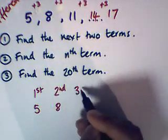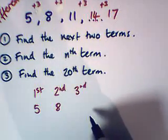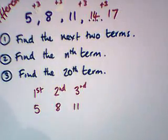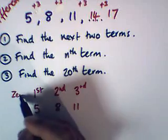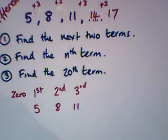Term number 3, the third term, is 11, and so on. Now, what I want to ask you is, what would be the 0 term? The term before the first term.